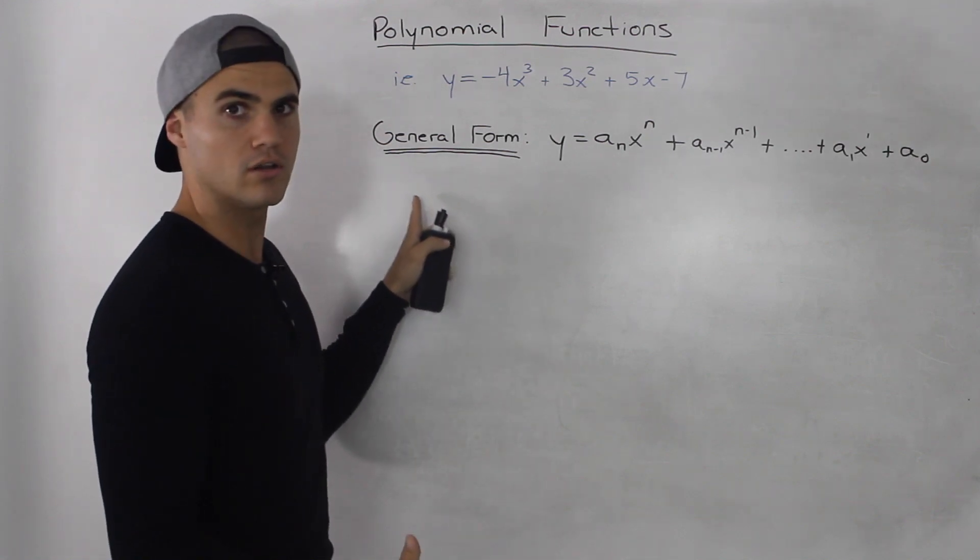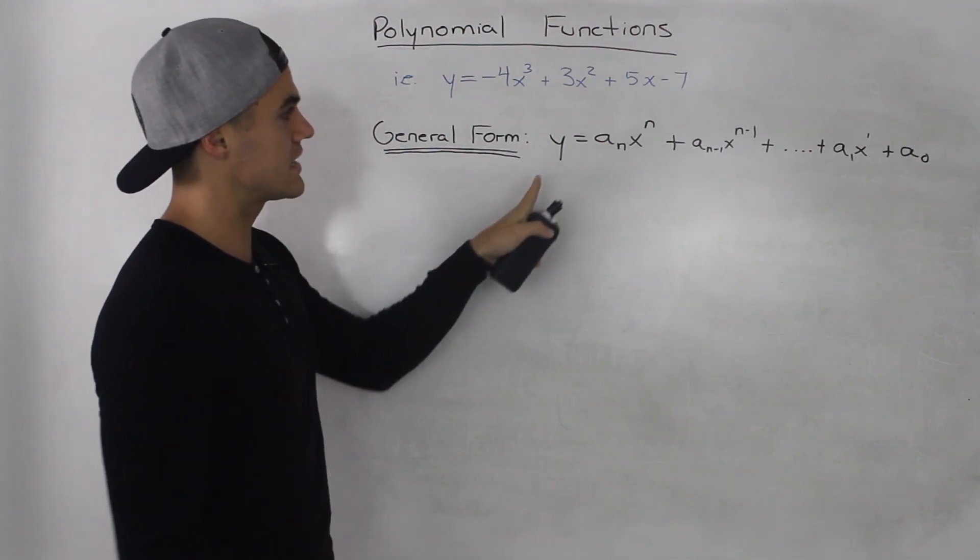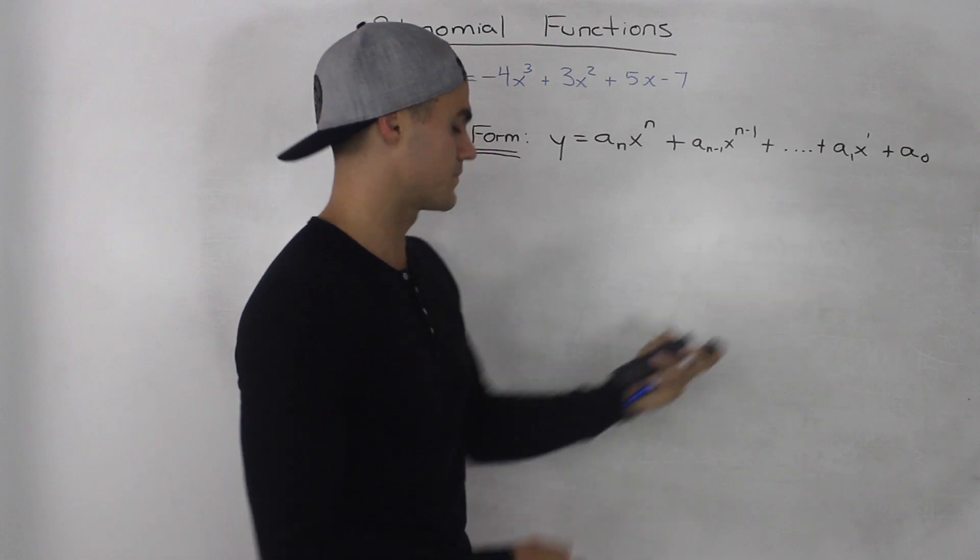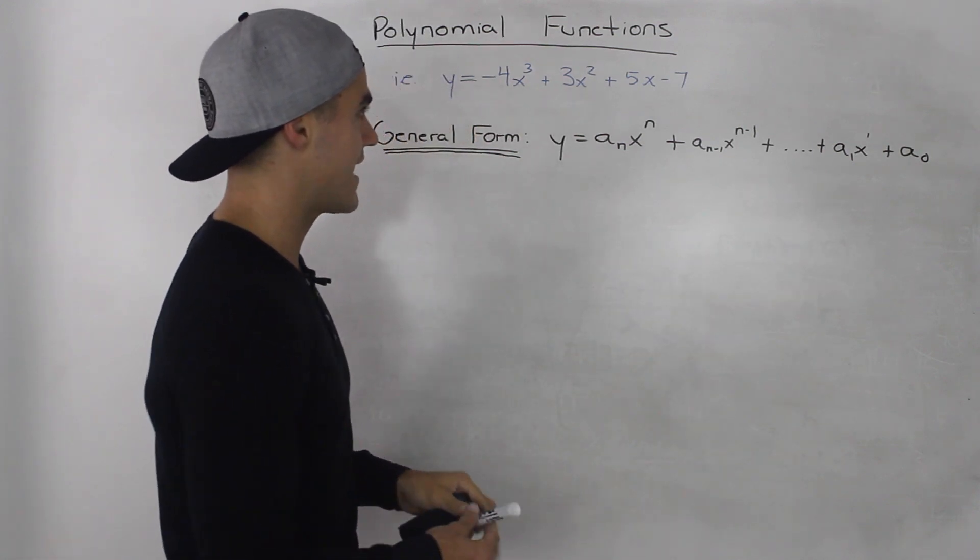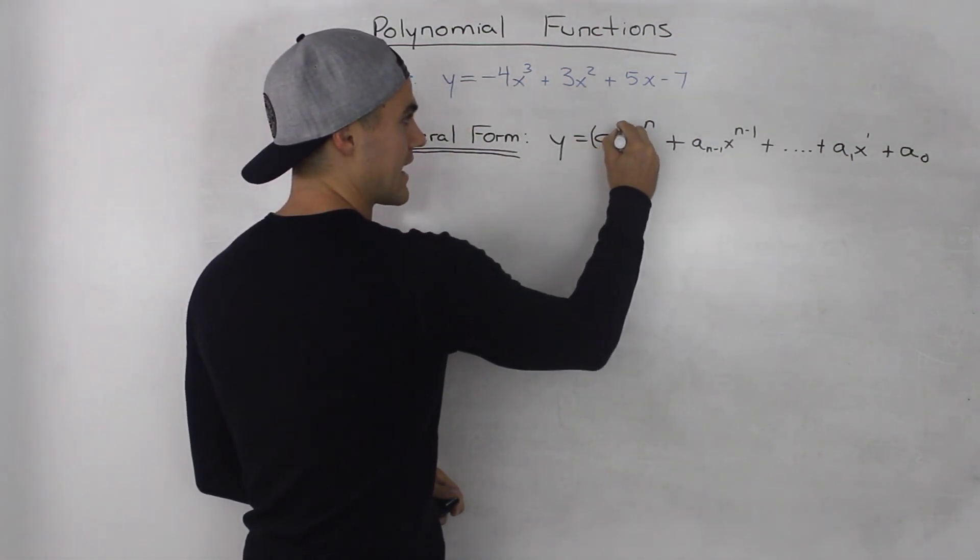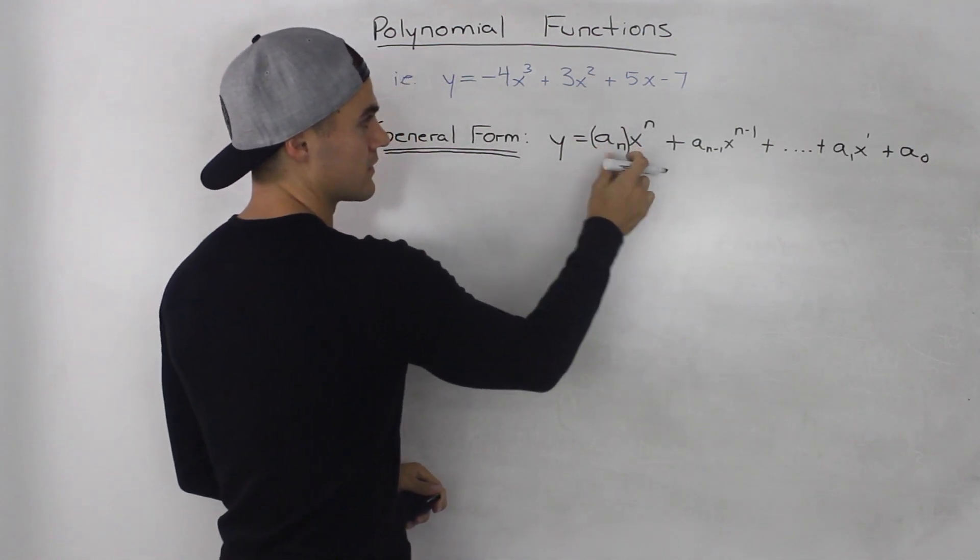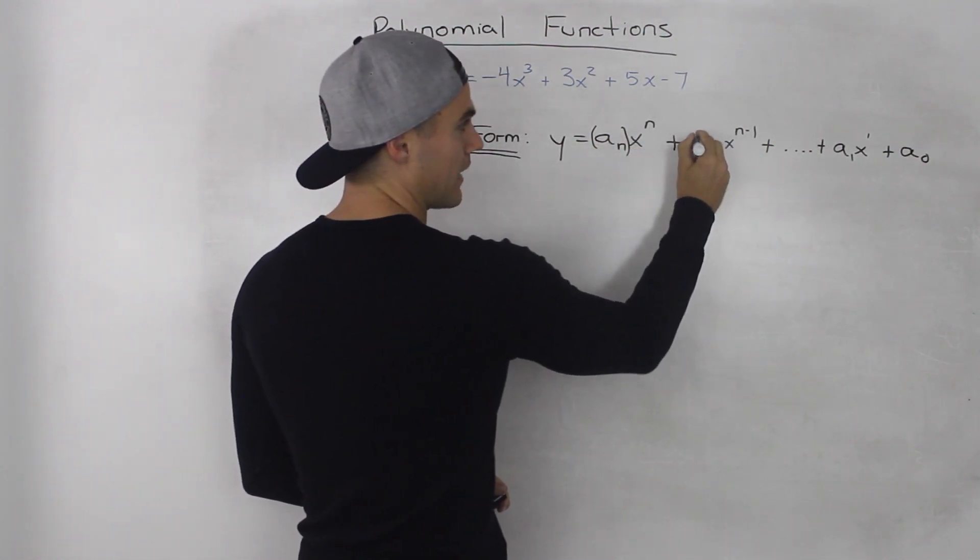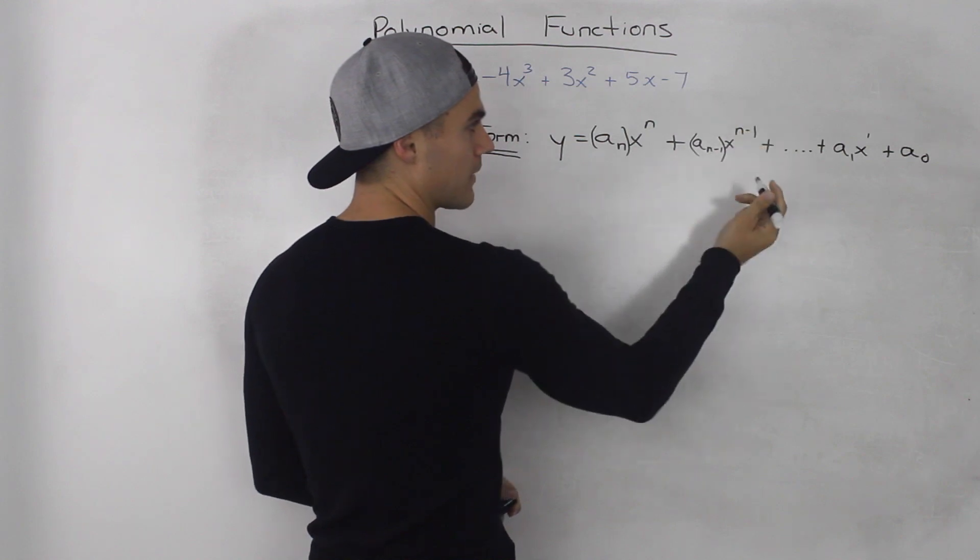In general, the kind of format they take is this. So we have a_n times x to the power of n, where a_n is a coefficient, plus a_(n-1) times x to the power of n minus 1...